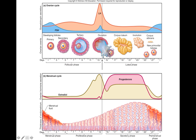The oocyte, the egg, is headed down the fallopian tube. The corpus luteum remains inside the ovary and will hang out for about two weeks, producing hormones. If you have a fertilized egg, it will actually hang around for longer — continuing to produce those hormones until the placenta is up and running, which takes about three months.